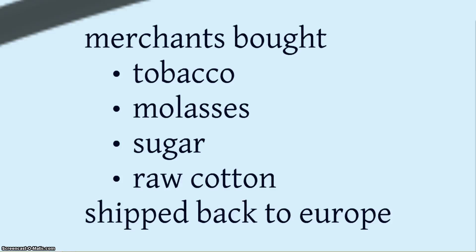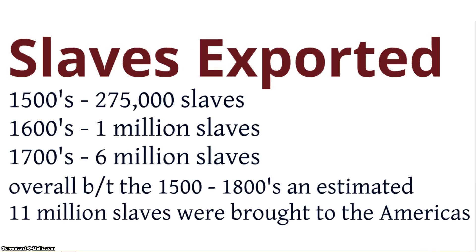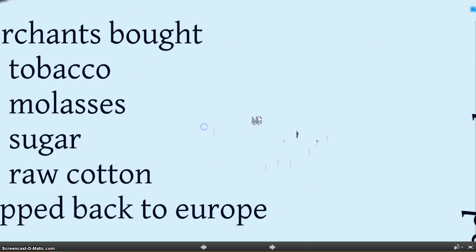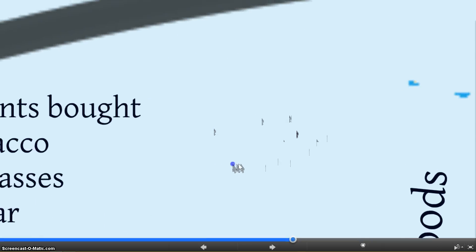Merchants would then carry sugar, molasses, tobacco, raw cotton, and American goods like furs, saltfish, and rum — which is made from molasses — and trade that back to Europe. So we've gone back to the repeat part, where this cycle is done over and over again.